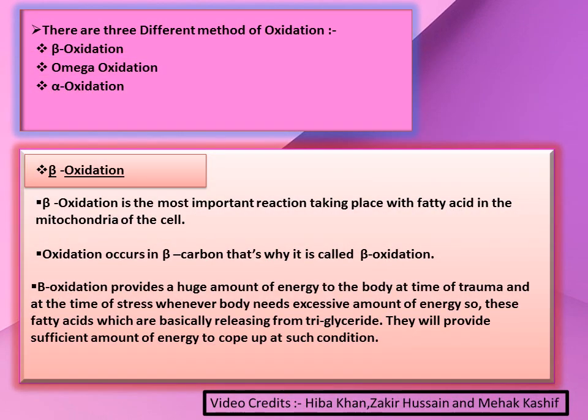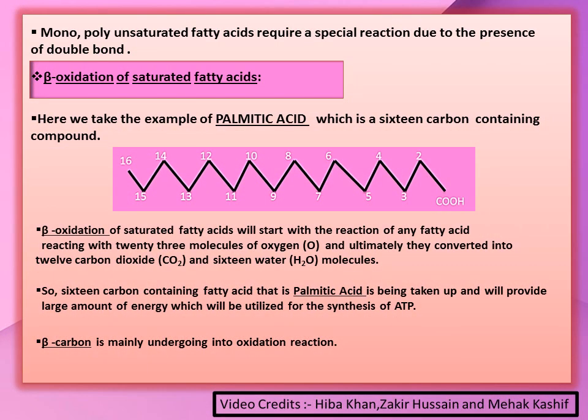Oxidation occurs by several methods — three methods are important: beta oxidation, omega oxidation, and alpha oxidation. The quantitatively most important oxidation process is beta oxidation, as it provides a huge amount of energy to the body during trauma and stress, whenever the body needs excessive amounts of energy. Fatty acids released from triglycerides provide sufficient energy to cope under such conditions.